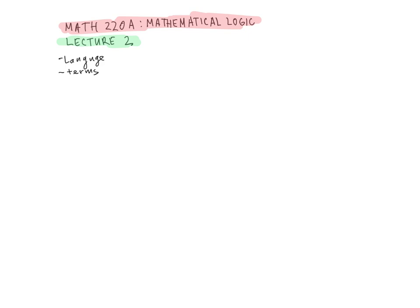Hello everyone and welcome to Math 220a, Mathematical Logic, Lecture 2. Let me briefly remind what we covered in the previous lecture. We defined first-order languages, defined terms and discussed unique readability for terms, and defined formulas — both atomic formulas and general formulas. All of this was on the syntactic side. We also defined structures and the interpretations of logical symbols in a language and in a structure. These two notions are on the semantic side, establishing the beginnings of the relation between syntax and semantics.